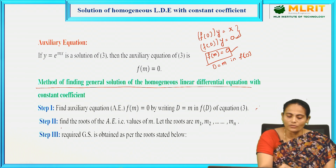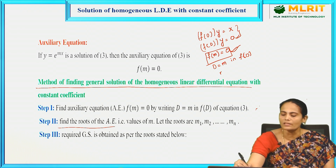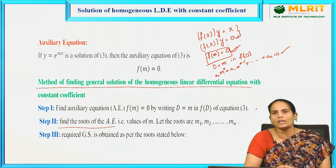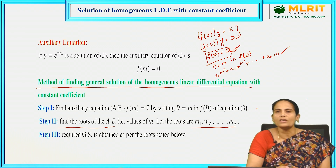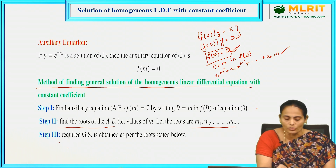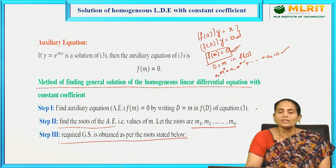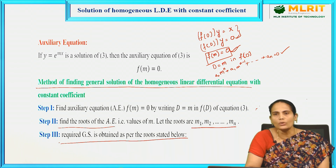Next, find the roots of the auxiliary equation. f(m) = 0 gives a₀mⁿ + a₁mⁿ⁻¹ + ... + aₙ = 0 — an algebraic equation with n roots total, which we label m₁, m₂, ..., mₙ. Based on these roots, the required general solution is obtained as described below. Now we will see the different types of roots and find the complementary function, which is the general solution of f(D)·y = 0.